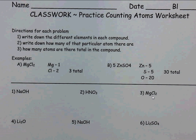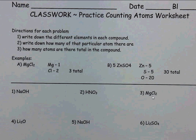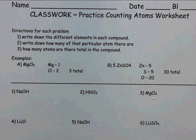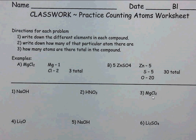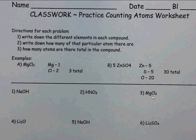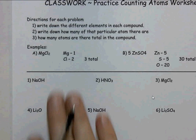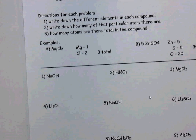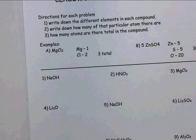This is dealing with counting elements and counting atoms within a formula or a molecule. The first thing we need to do is look at the examples at the top, but I'm going to do the first row — number 1, 2, and 3 — with you. So let's look at number 1.